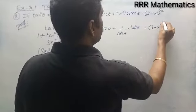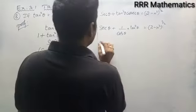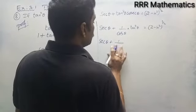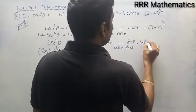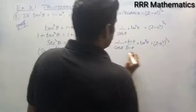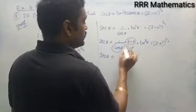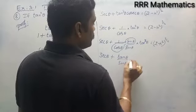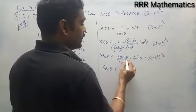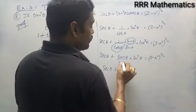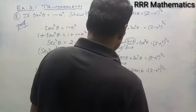This equals 2 minus k squared whole power 3 by 2. Now secant theta is 1 by cos theta, and in the proof I need tan cube theta. So I multiply and divide by sin theta. When you multiply and divide by sin theta, sin theta divided by cos theta becomes tan theta, so tan theta into tan squared theta becomes tan cube theta, and 1 by sin theta becomes cosecant theta. Hence proved.